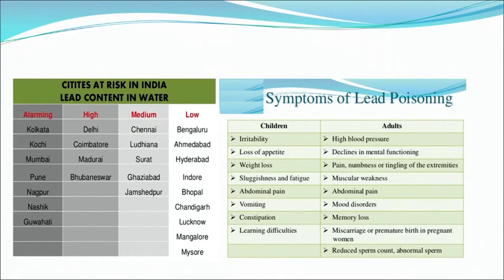The figure shows various cities at risk in India for lead content in water, in four categories: alarming, high, medium, and low. Alarming category includes Kolkata, Kochi, Mumbai, Pune, Nagpur, Nashik, and Guwahati. High-risk cities include Delhi, Coimbatore, Madurai, and Bhubaneswar. Medium cities include Chennai, Ludhiana, Surat, and Ghaziabad. Low-risk cities include Bangalore, Ahmedabad, Hyderabad, Indore, Bhopal, and Lucknow.